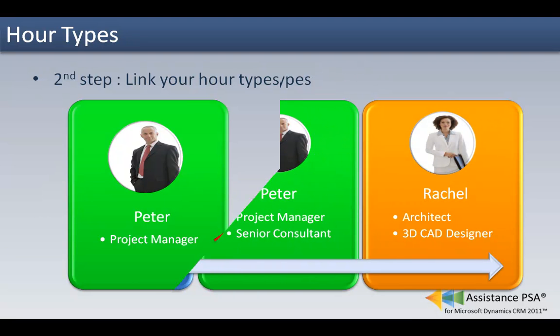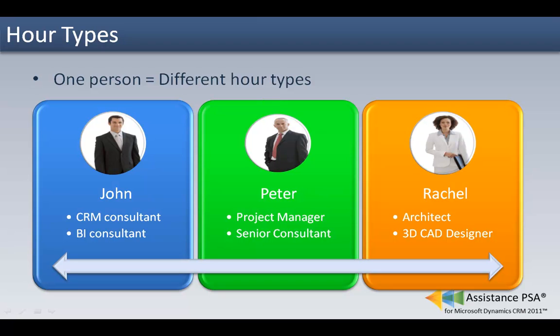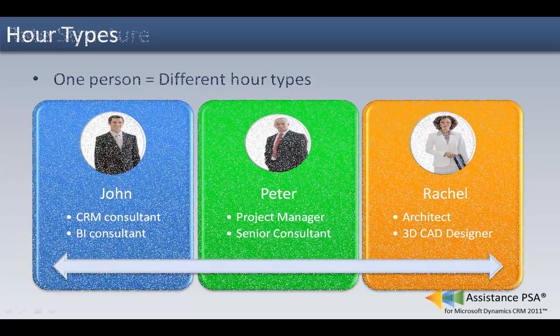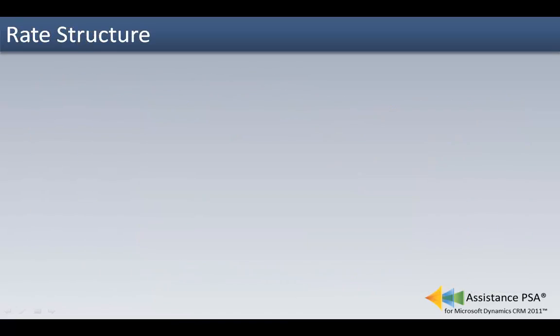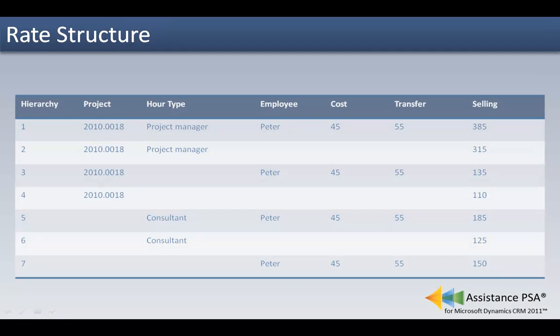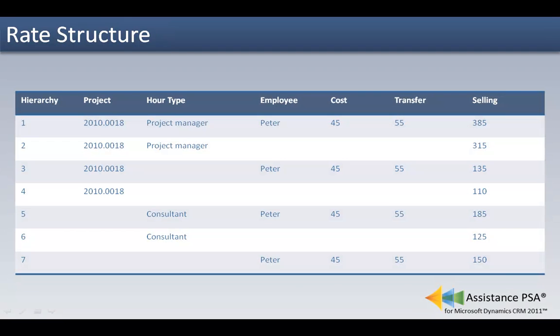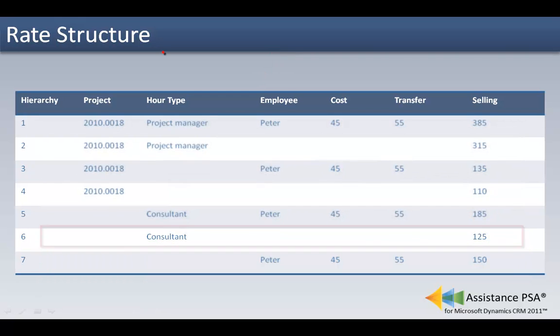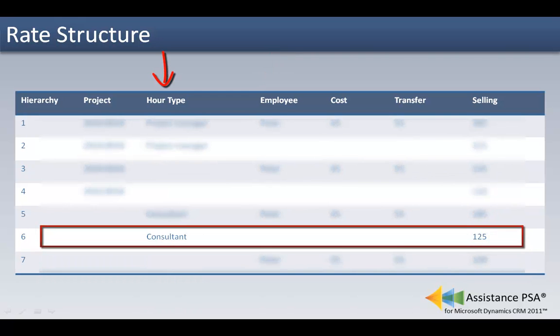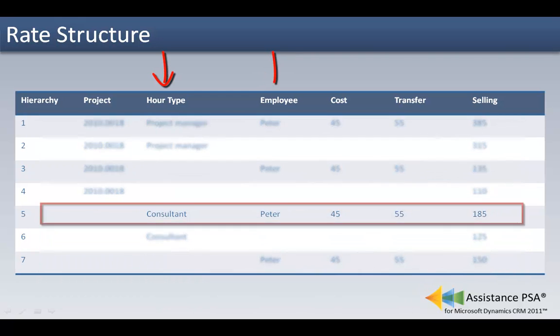Because a person can play different roles within or between different projects, you can link more than one hour type to each individual. Once you have configured your hour types, you need to define your hourly rates. Assistance PSA will let you create hourly rates per employee, per hour type, or a combination of the two.